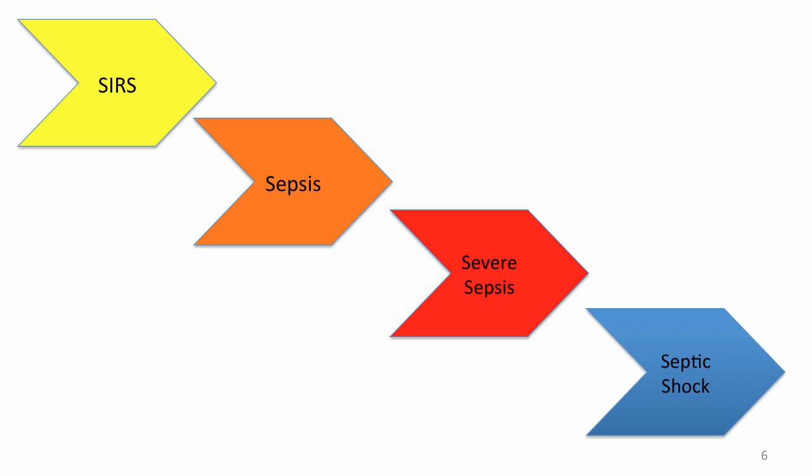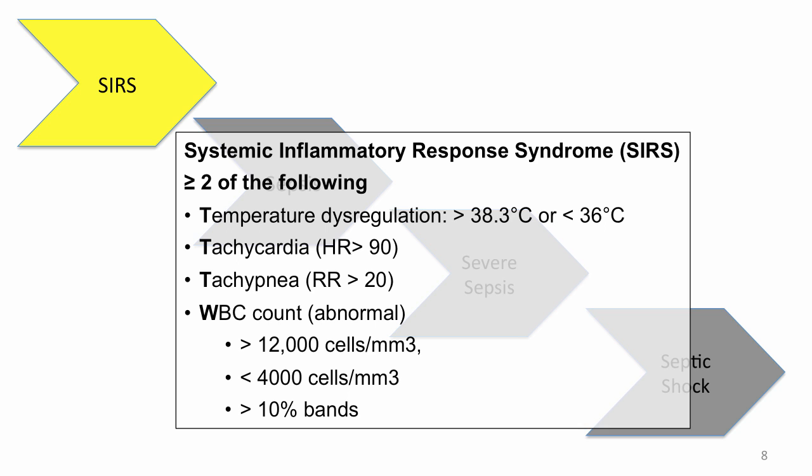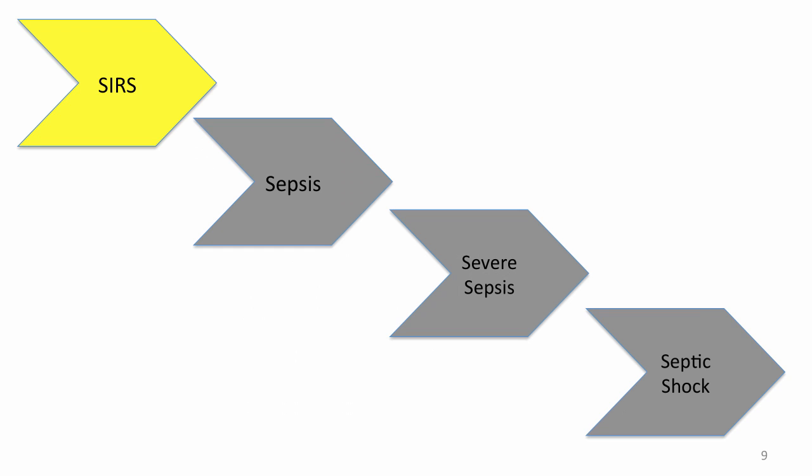The cascade goes: SIRS, sepsis, severe sepsis, and septic shock. SIRS — systemic inflammatory response syndrome — is defined as having two or more of the following: temperature dysregulation (fever or hypothermia), tachycardia, tachypnea, or an abnormal white blood cell count. The white cell count can be very high or very low, or you can see an increase in bands, an immature form suggesting a stress response.